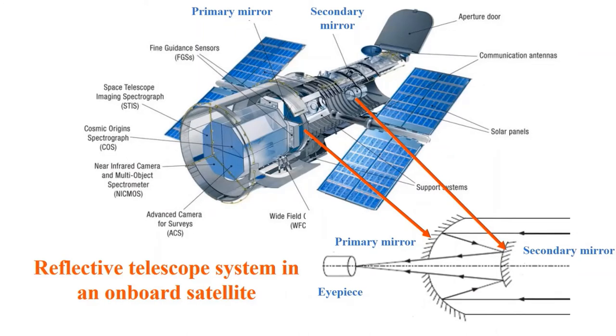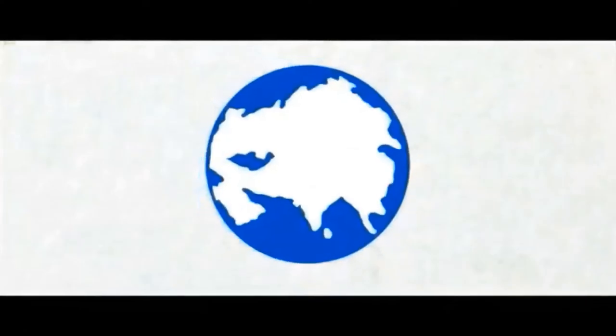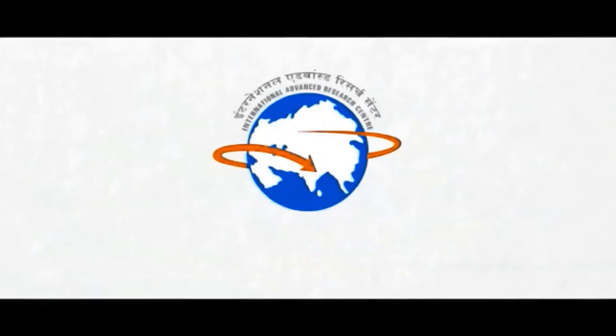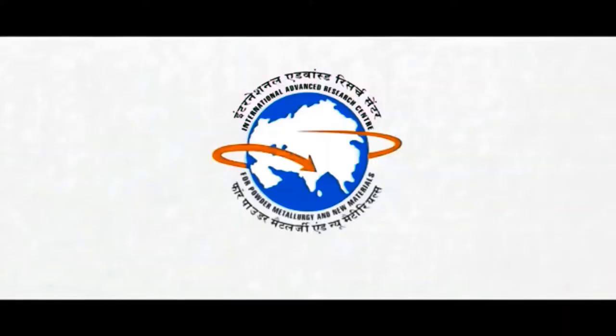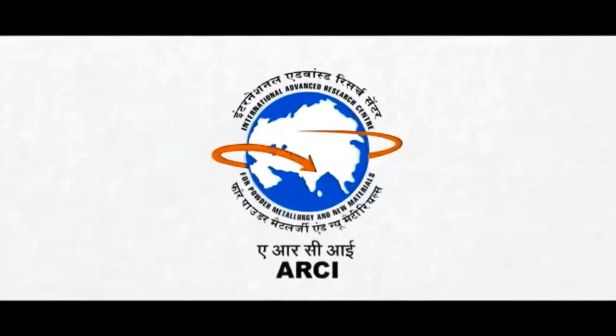Finally, data received at the ground station is converted to images and used for different applications. The International Advanced Research Center for Powder Metallurgy and New Materials (ARCI) is engaged in the development of silicon carbide mirrors for space optics applications.